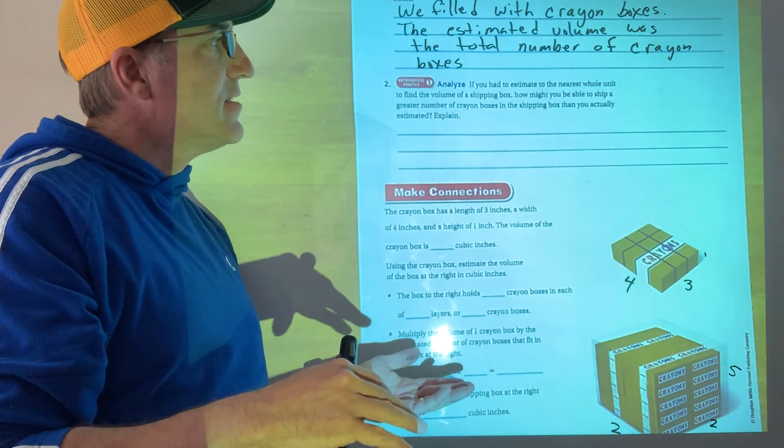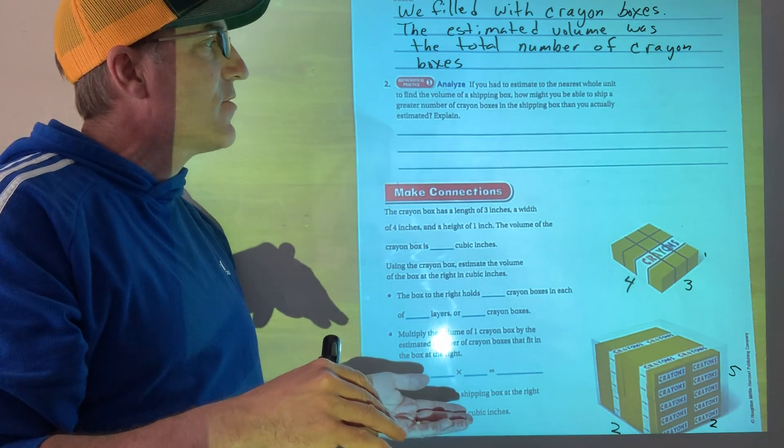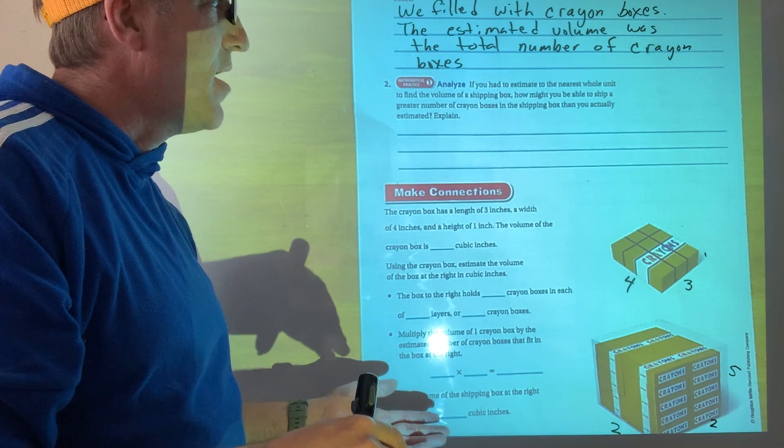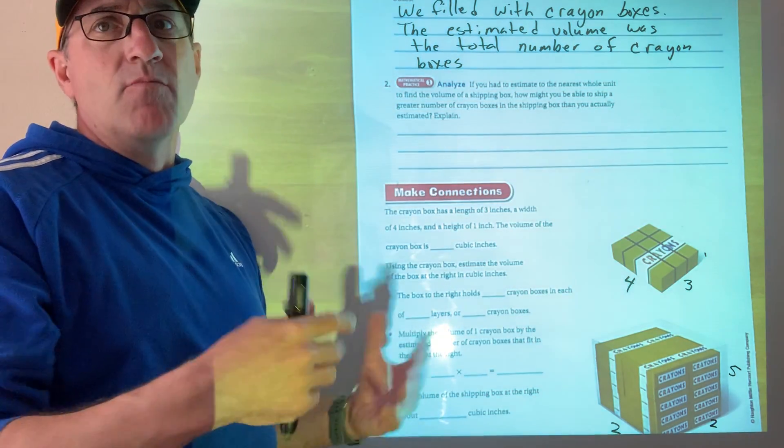So if you had to estimate to the nearest whole unit to find the volume of the shipping box, how might you be able to ship a greater number of cram boxes in the shipping box than you actually estimated? This is just a fancy way of saying, how could I squeeze in more?